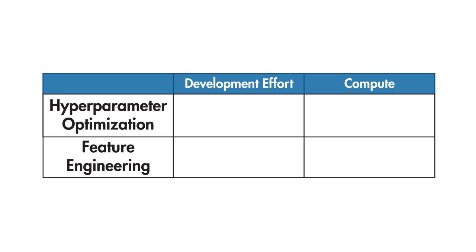The main reason to do hyperparameter optimization is to improve the model. Although there are other things we could do to improve it, I like to think of hyperparameter optimization as being a low-effort, high-compute type of approach. This is in contrast to something like feature engineering, where you have higher effort to create the new features, but you need less computational time. It's not always obvious which activity is going to have the biggest impact, but the nice thing about hyperparameter optimization is it lends itself well to overnight runs, so you can sleep while your computer works.